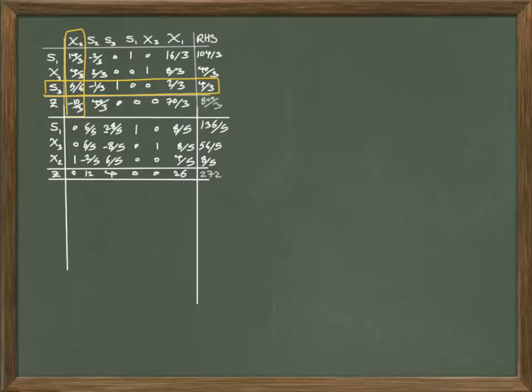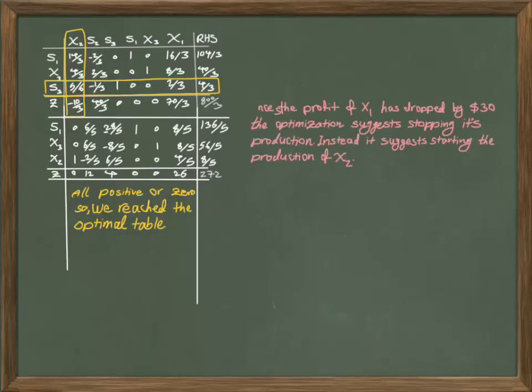But see what happened. By decreasing the coefficient of x1, meaning by decreasing the profit from x1, we kicked x1 out of the basis. So we are no longer manufacturing x1 and instead of that we are producing x2.